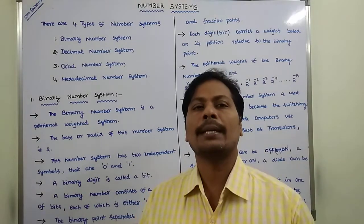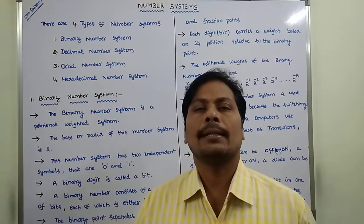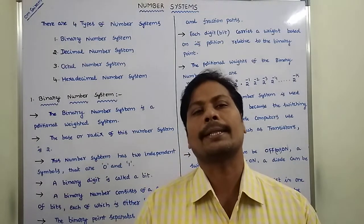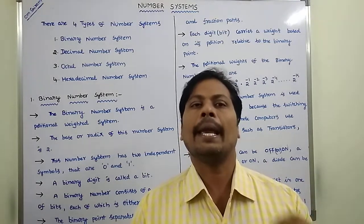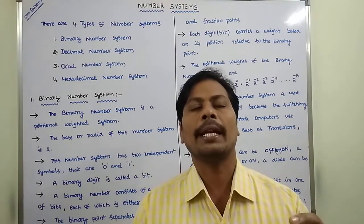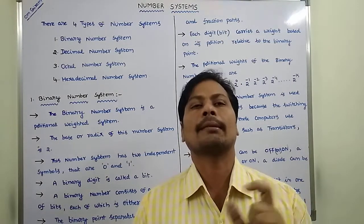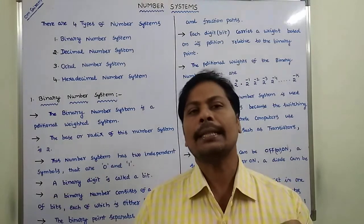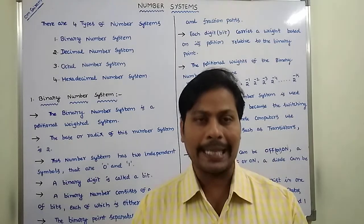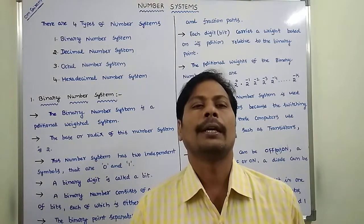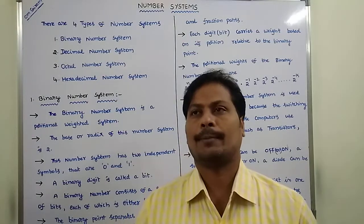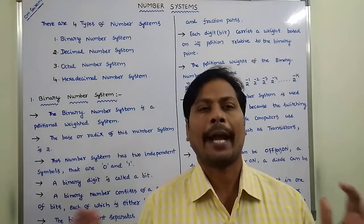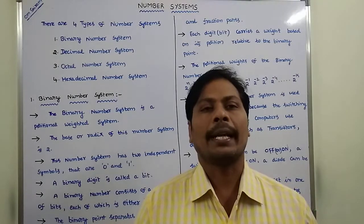A binary number system has a positional weighted system. In a binary number, every bit is called a binary digit, and each digit has a particular positional weight based on its position relative to the binary point. The binary point separates the integer part and the fraction part in a binary number.